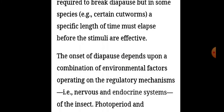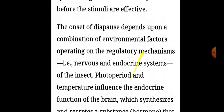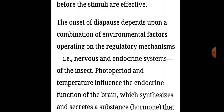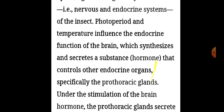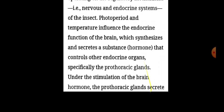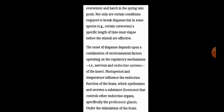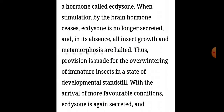The onset of diapause depends upon a combination of environmental factors operating on the regulatory mechanisms, i.e. the nervous and endocrine systems of the insect. Photoperiod and temperature influence the endocrine function of the brain, which synthesizes and secretes a hormone that controls other endocrine organs, specifically the prothoracic glands. Under the stimulation of the brain hormone, the prothoracic glands secrete a hormone called ecdysone.